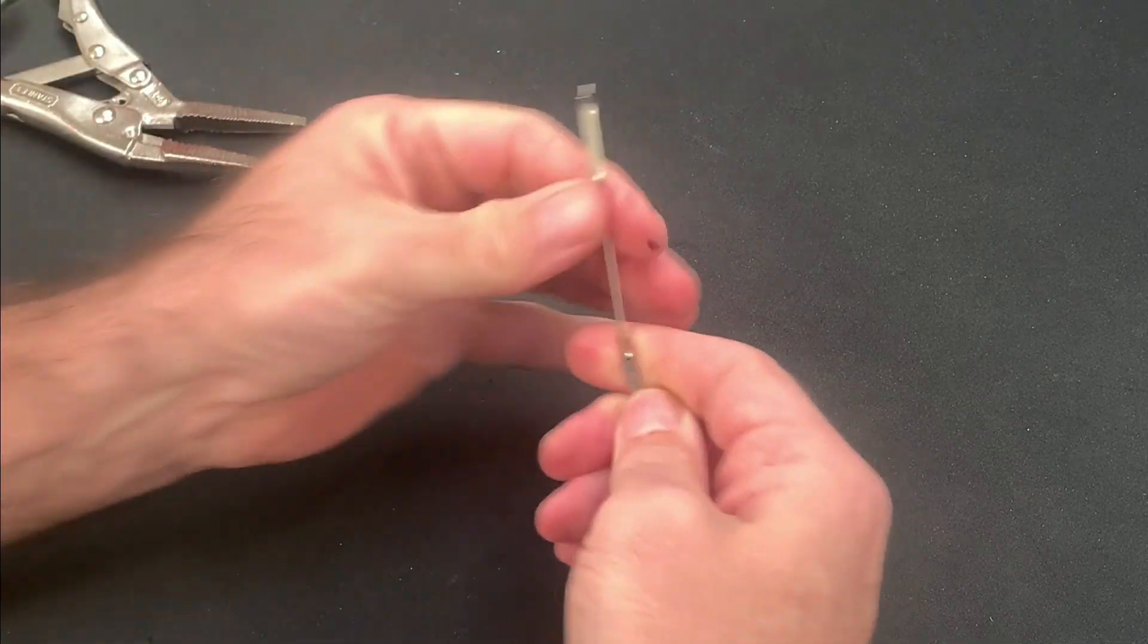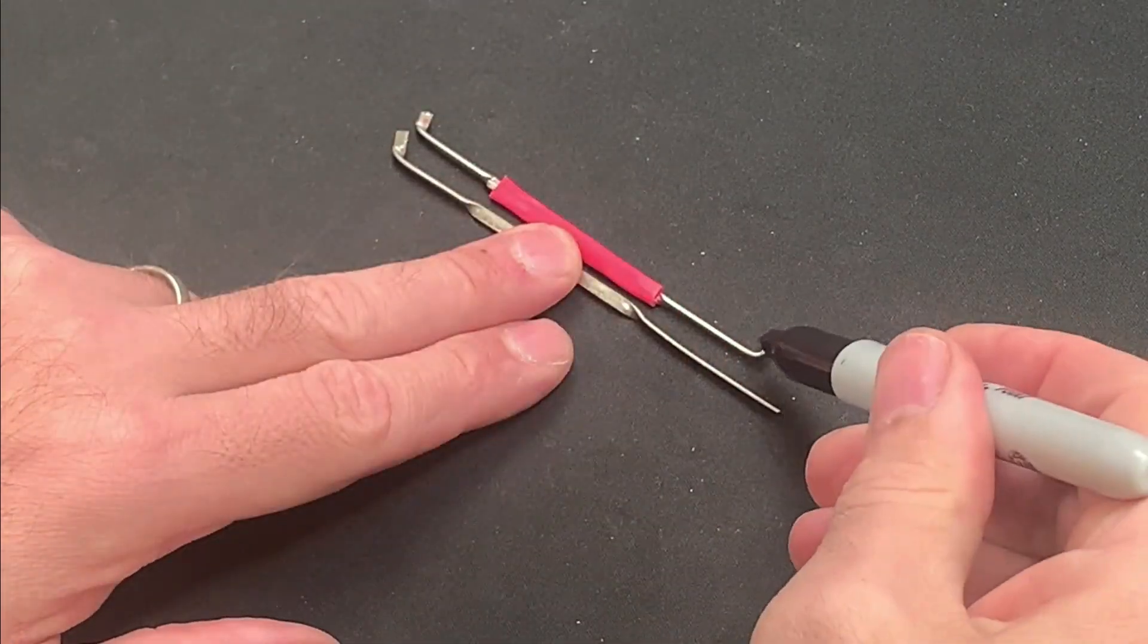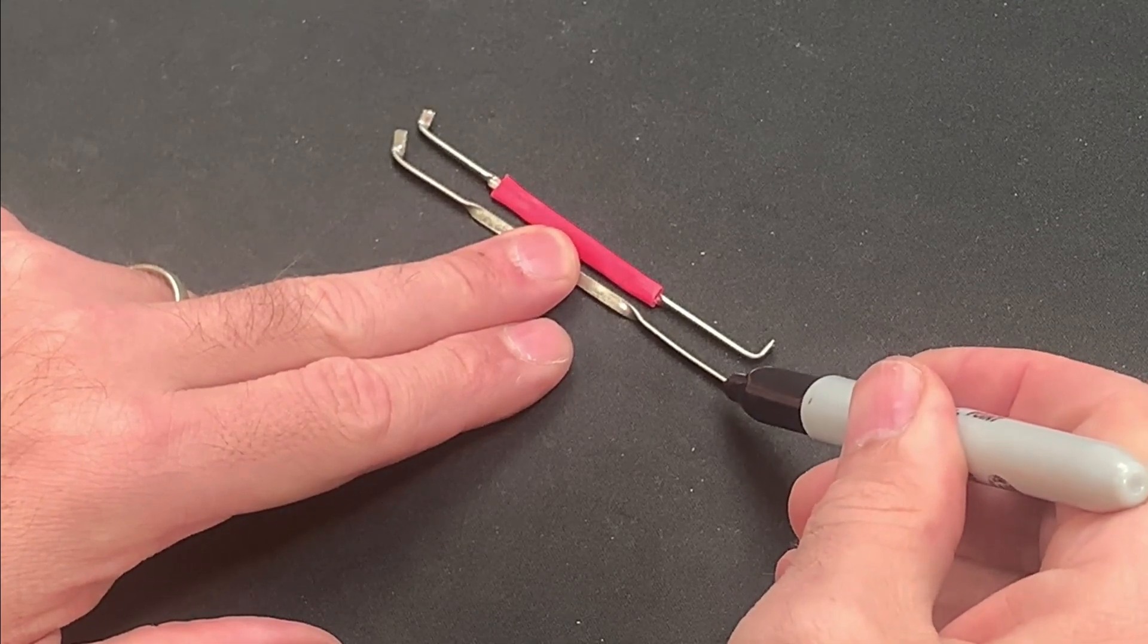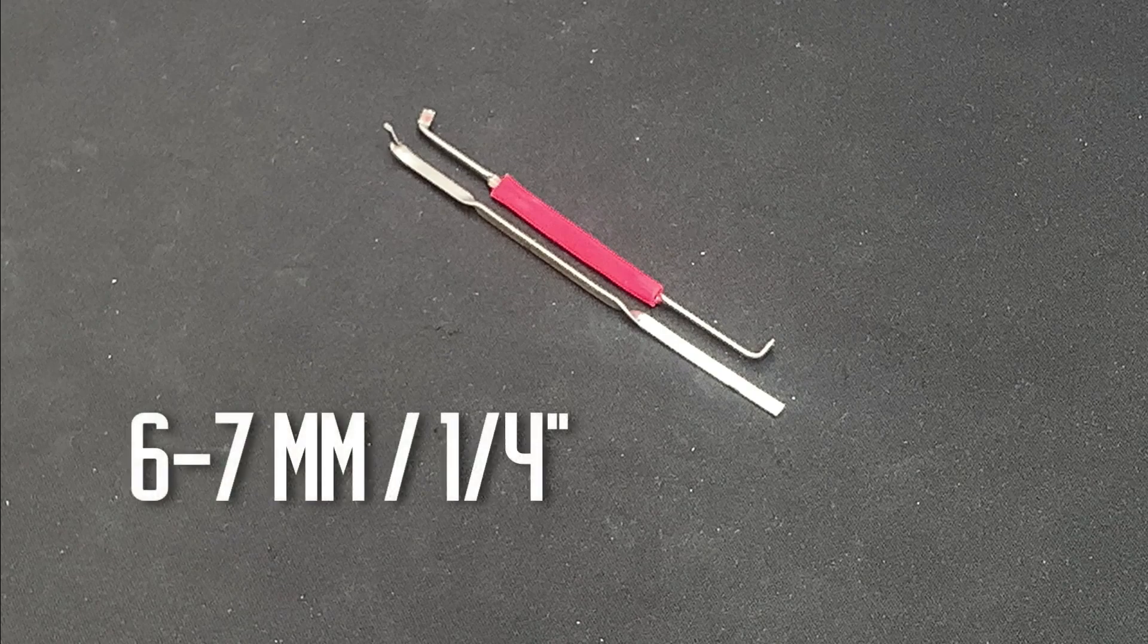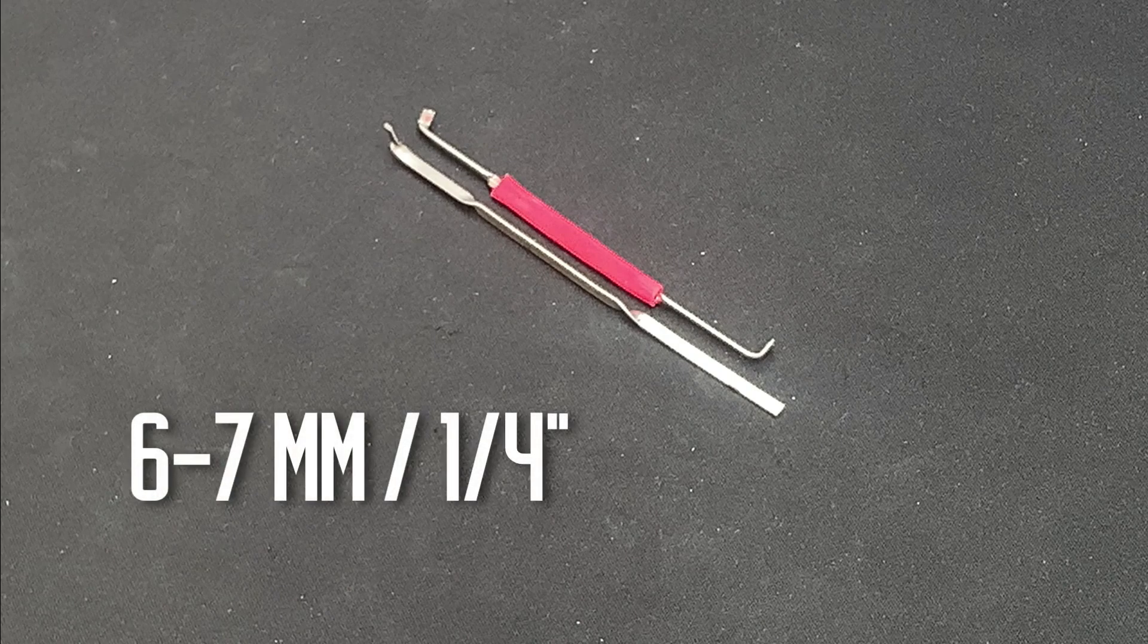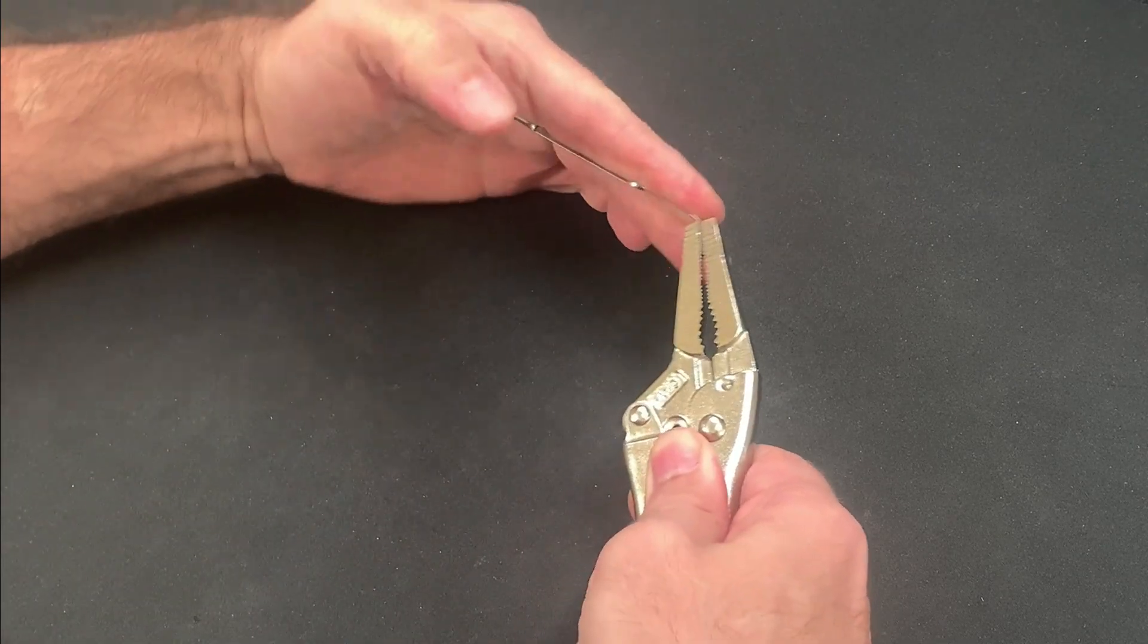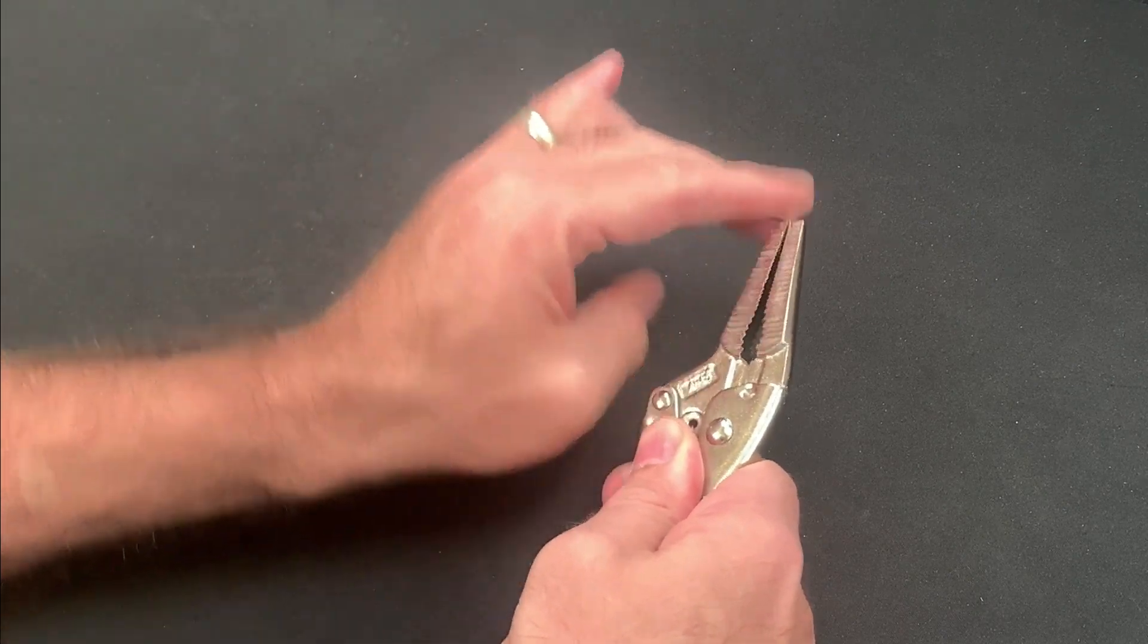That leaves us with just the tail of the tool which is simply a case of creating another 90 degree bend in the same direction as the head. Again the length of the tail depends on the locks you're likely to be working with but six or seven millimeters or just a little over a quarter of an inch seems a good starting point. If you have excess material this can be cut away and we now have the basic shape of the tool completed.